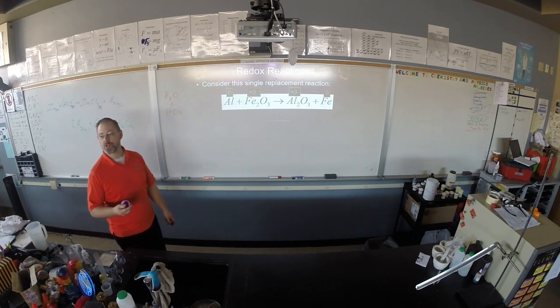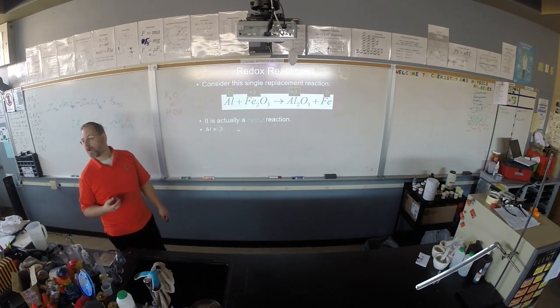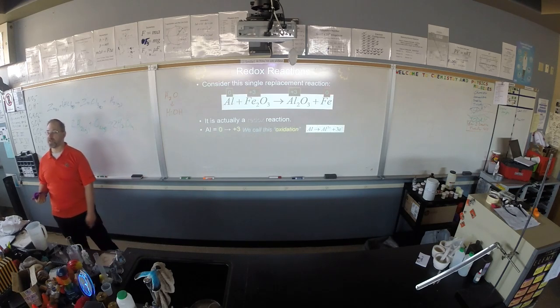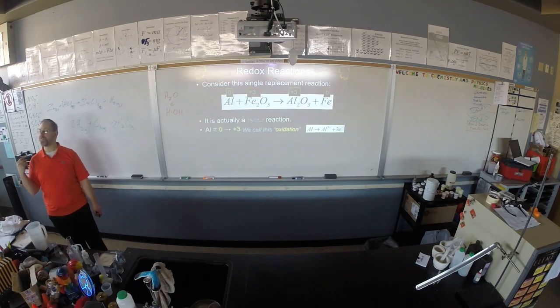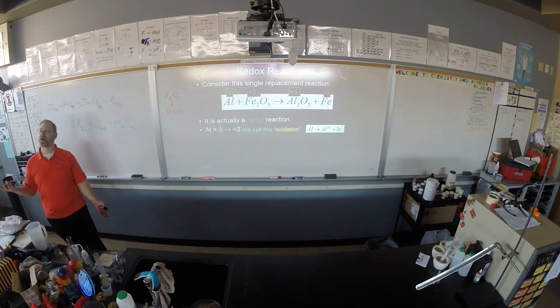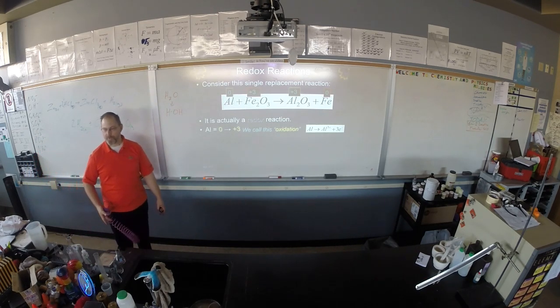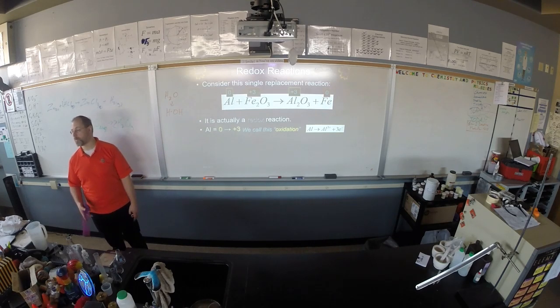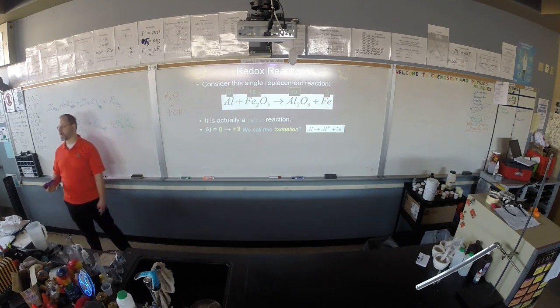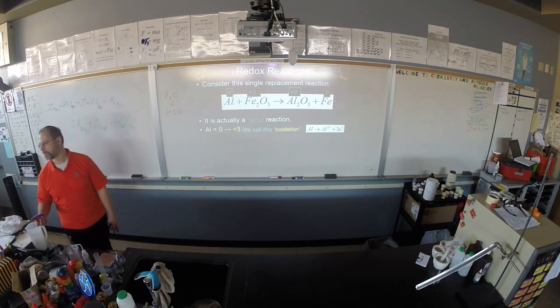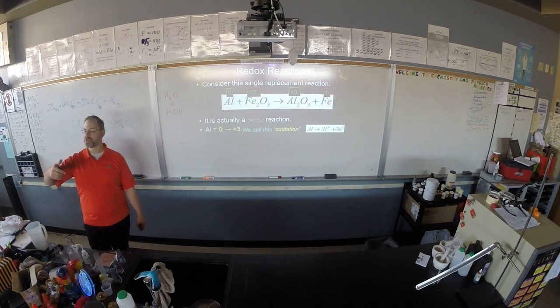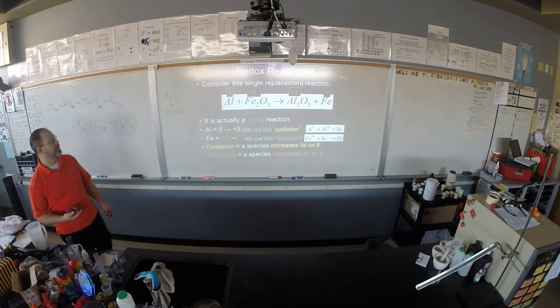A redox reaction occurs when you have changes in oxidation states. When oxidation goes up, we say that species has been oxidized or has undergone oxidation. If we get time in the spring to do electrochemistry, we'll spend a lot more time with redox. Right now, you just need to know that this is how it works. Oxidation up is oxidation. Oxidation down is called reduction.